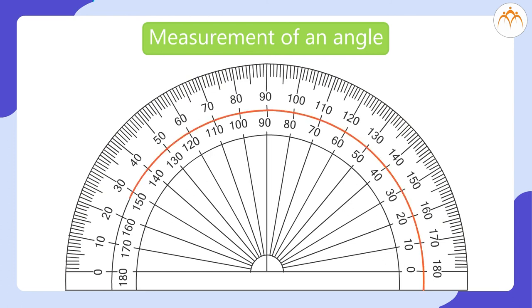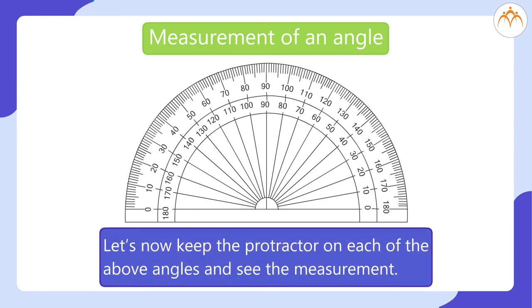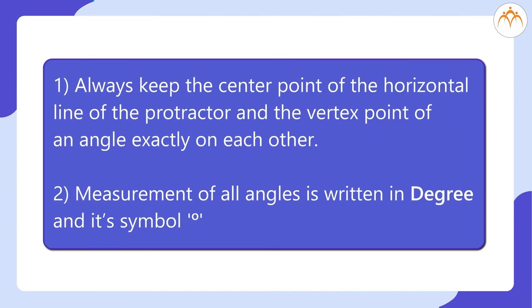Now look from right to left. The numbers are marked from 0 to 180. Number 90 is in the middle or is the center of a protractor. It is shown by a straight line. These are the numbers which help us to measure any angle. Let us now keep the protractor on each of the above angles and see the measurement. Remember, always keep the center point of the horizontal line of the protractor and the vertex point of an angle exactly on each other. Measurement of all angles is written in degree and its symbol.